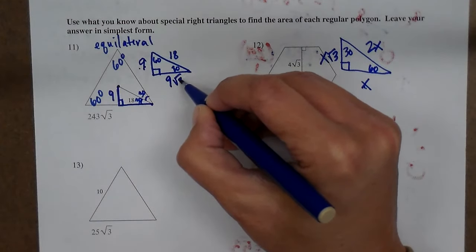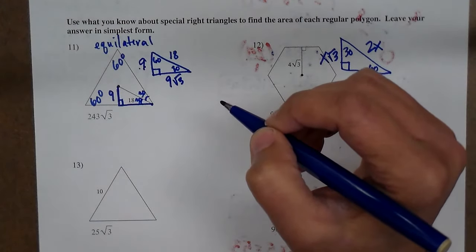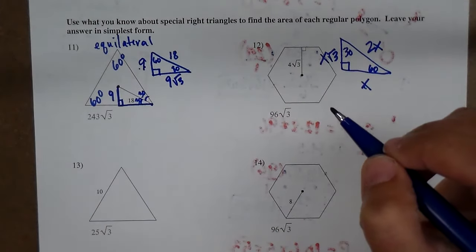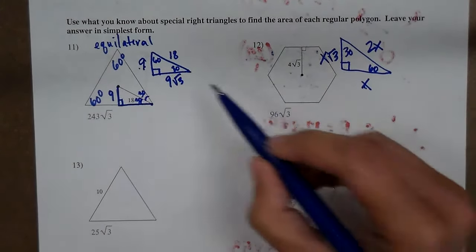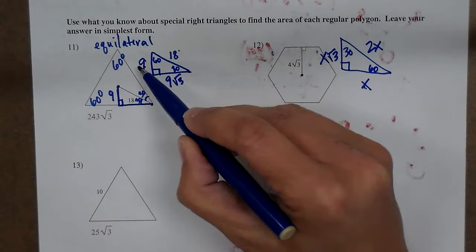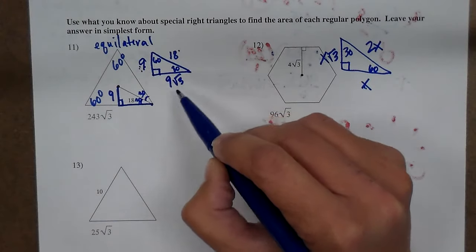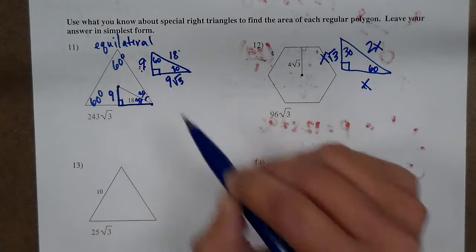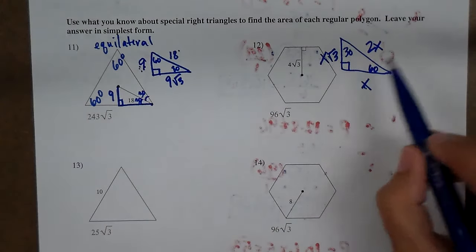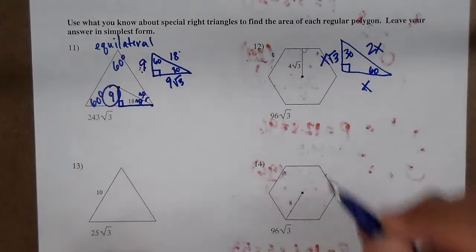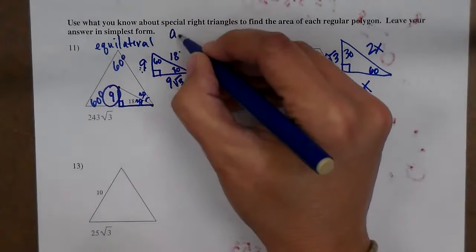This would be 9 square roots of 3. So the hypotenuse is twice as big as the one across from the 30, so that's why 18 went to 9. And the one across from the 60 is 9 square root of 3. My apothem is 9.